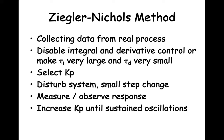To collect data for the Ziegler-Nichols method, the integral control and the derivative control parts of the controller are disabled. If the integral part cannot be disabled, set the value for tau i to some very large or maximum value. If the derivative control cannot be disabled, set tau d to a very small or minimum value. Then select a Kp value, disturb the system with a small step change, and record the process response. If you don't get sustained oscillations, increase Kp and disturb the process again. Repeat until the process output is a sustained oscillation.